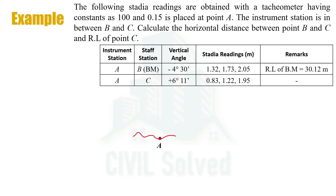I have drawn the sketch for point A in the middle. The Stadia readings taken at point B and point C are also being shown here. Looking at the Stadia readings for point B, which is also the benchmark, we can see that the vertical angle is negative, which means point B is at a lower altitude than point A because this angle is an angle of depression.